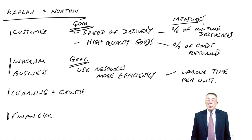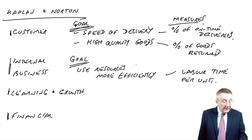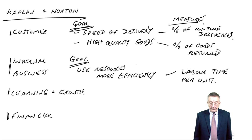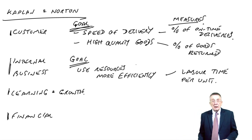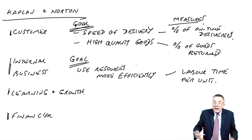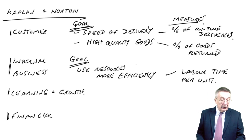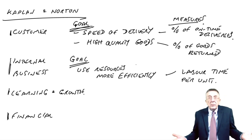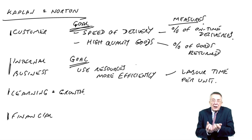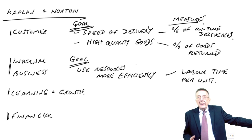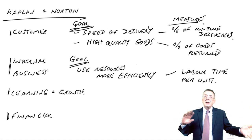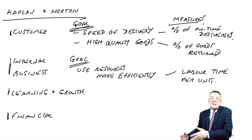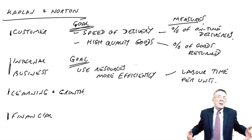Learning and growth perspective — similar to one of Fitzgerald and Moon's dimensions. The question is: how can we continue to improve and create future value? We've got to do well in the future and continue to think of new ideas. An example measure is the number of new products introduced. We need to keep thinking of new products — they may not all be successful. But if we simply rely on existing products, thinking back to life cycle costing, there will come a time when somebody else steals our market or those products stop being as saleable.